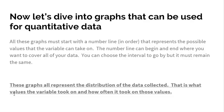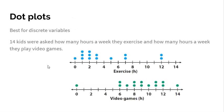These graphs all represent the distribution of the data that's collected. That is what values the variable took on and how often it took on those various values. At the end of this topic, we're going to talk about what we see in these graphs, and what we see is called the distribution. The distribution is just seeing where your data falls - what's the lowest, what's the highest, is there more data here, is there less data here. That's the kind of things we look for when we talk about a distribution.